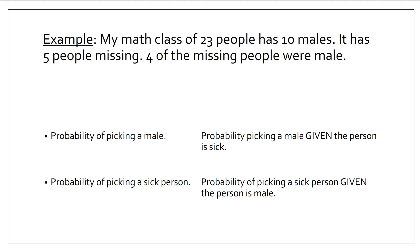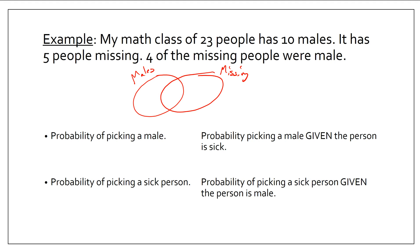Here's our example: my math class of 23 people has 10 males and five people missing. Four of the missing people were male. Let's set up a Venn diagram — one bubble represents the males in the class, the other represents the missing people. These are overlapping events because some missing people were male. When setting up a Venn diagram, I always start in the middle. Four people who were missing were male, so they go in the overlap — they were both missing and male. Since five people total were missing and four are in the overlap, one missing person wasn't male — that one person is female.